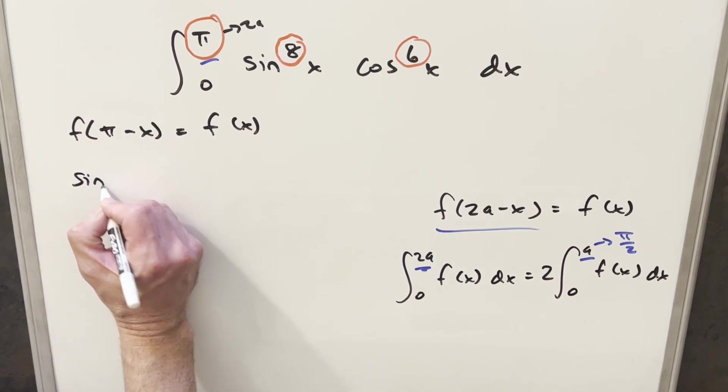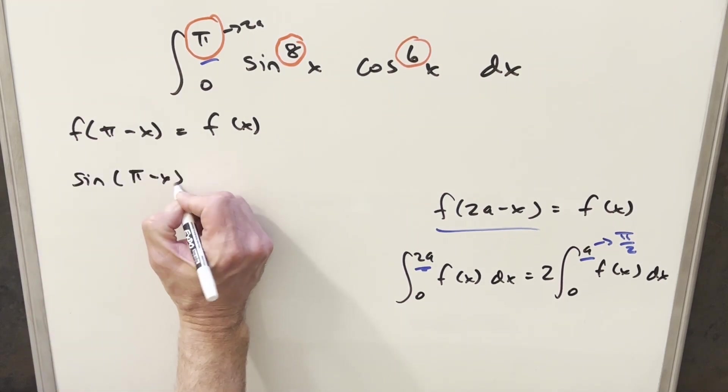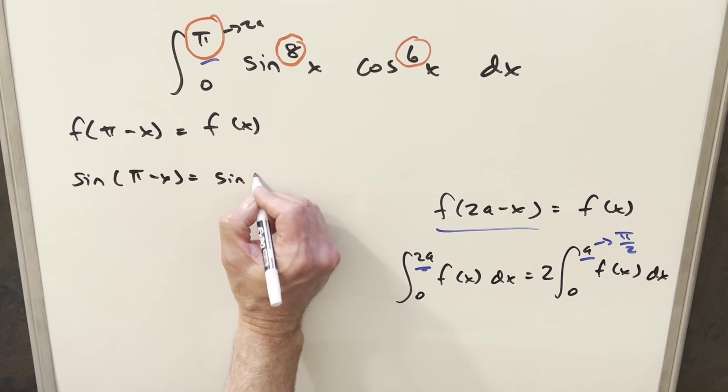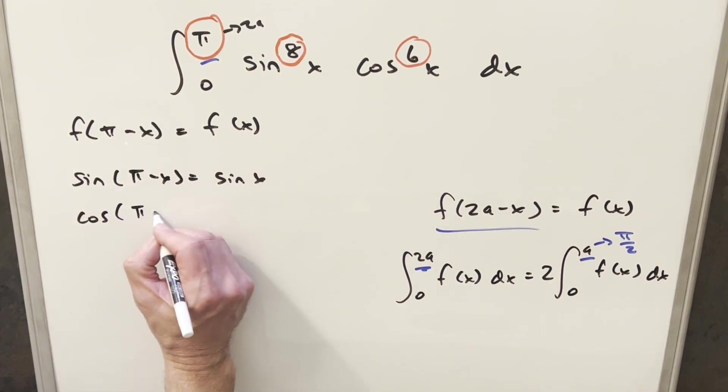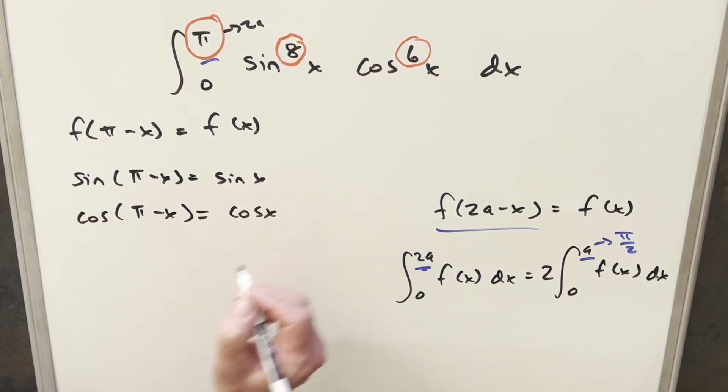So first what I can do is calculate it for sine. Sine of pi minus x is just going to be sine of x. And for our other term cosine,